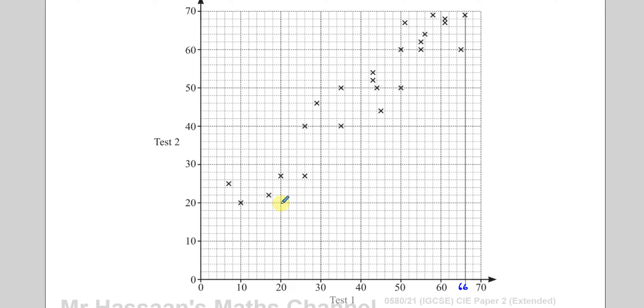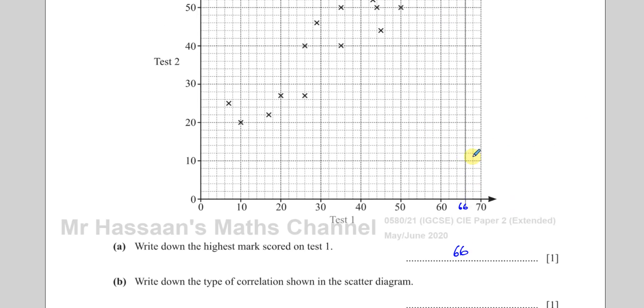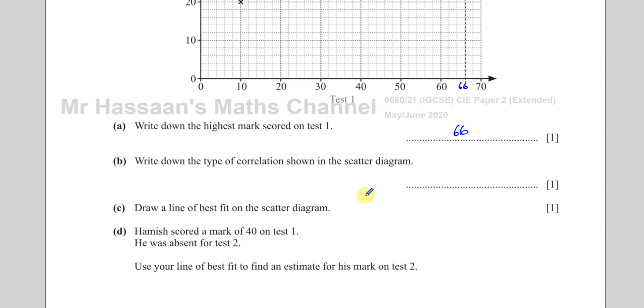This is called positive correlation. These are lined up in such a way that they make some sort of positive gradient, a general positive gradient. If they were going in this way, that would mean that the ones who got higher in test 1 would get lower in test 2. One is high, the other is lower, that would be negative correlation. This is positive correlation. So here we can just write positive. That's absolutely fine as your answer.